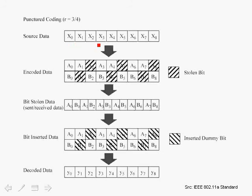Here the source data is shown — it is the output of the scrambler but contains the actual data. This block shows the output of the convolutional encoder. For every input bit we generate two bits, so here we have eight input bits and we get 16 bits at the output of the convolutional encoder.